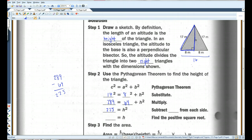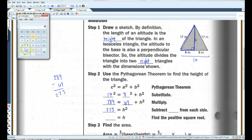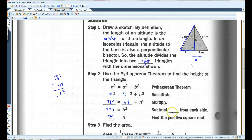225. The square root of 225, I believe, is 15. Yep. Oh, and I forgot to write that we subtract 64 from both sides. There we go. So, this is the height.